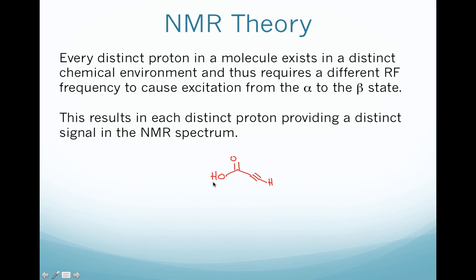It's very easy to tell that we have a carboxylic acid proton and an alkyne proton. They're in very different chemical environments. So each of these protons is going to be excited by a different RF frequency. That means those different frequencies are going to result in different NMR signals. So this compound is going to show two NMR signals.